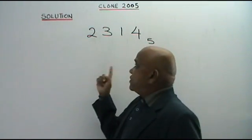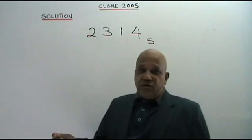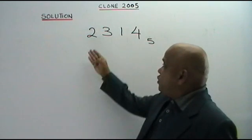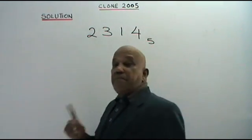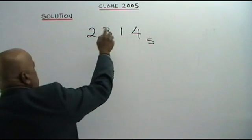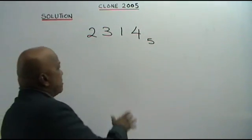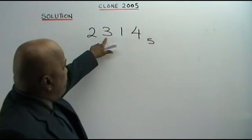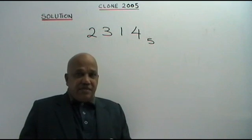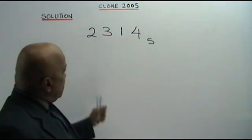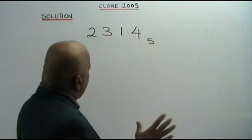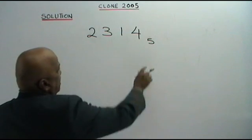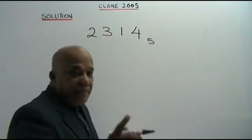Here I have for you a clone question based on the year 2005 again. But this time, you are given a number in base 5 — 2, 3, 1, 4 base 5. And from here, you are supposed to find the value of digit 3 in base 10.